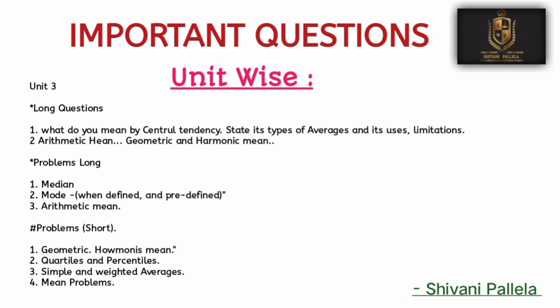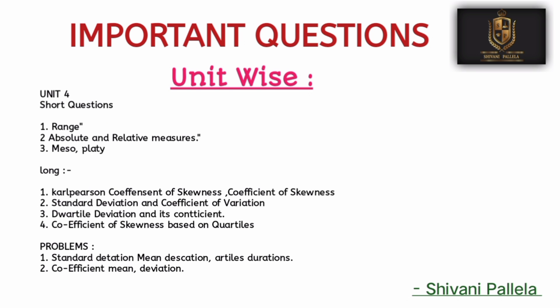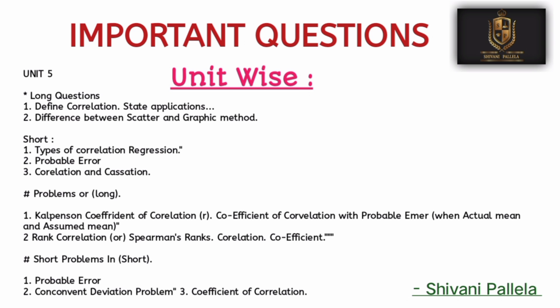For Unit Number 4, the important long questions are: coefficient of skewness, standard deviation, and coefficient of variation — these are very important. For short questions: range, absolute and relative measures. Also important from Unit 4: Pearson's coefficient of correlation, coefficient of skewness, standard deviation, coefficient of variation, and quartile deviation.